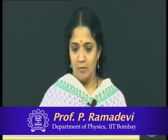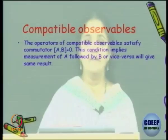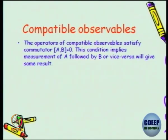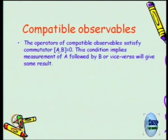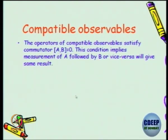So let me get on to compatible and incompatible observables. As I have already said, the operators of compatible observables satisfy the commutator [A, B] equal to 0. There could be a set of compatible observables with [A, B] equal to 0.